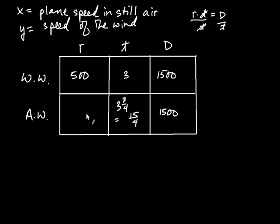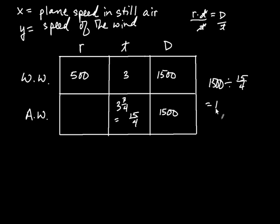The same thing holds for the against-wind row: that rate is 1,500 divided by fifteen-fourths. That's equal to 1,500 over 1 times four over fifteen. Fifteen goes into 1,500 a hundred times, and four times a hundred is 400. So this rate is 400.